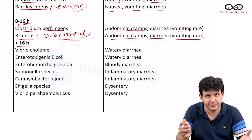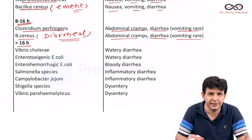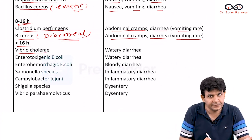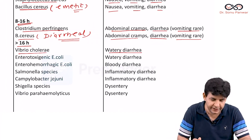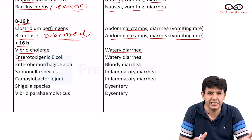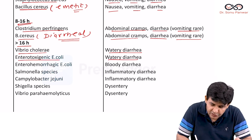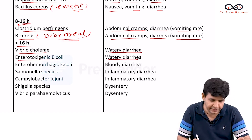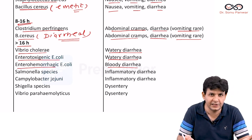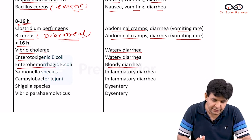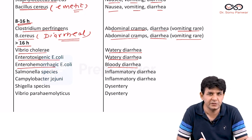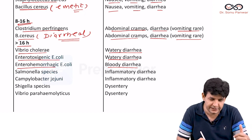More than 16 hours is a big list. Vibrio cholerae associates with watery diarrhea. Enterotoxigenic E. coli causes traveller's diarrhea — also watery diarrhea. Enterohemorrhagic E. coli causes bloody diarrhea or dysentery, and the special serogroup is O157:H7, which associates with bloody diarrhea.